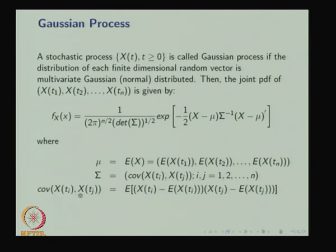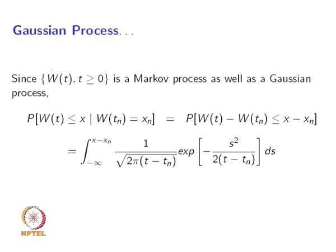Since W(t) is both a Markov process and a Gaussian process, we can write down the conditional CDF. The conditional CDF, given W(tₙ) = xₙ, equals the integral from −∞ to x − xₙ of the probability density function of a normal distribution with mean 0 and variance t − tₙ. For standard Brownian motion, W(0) = 0, μ = 0, and σ² = 1.